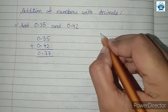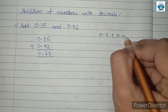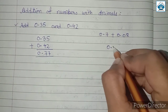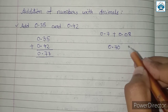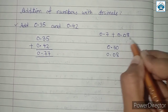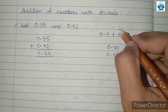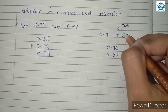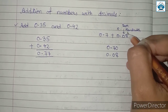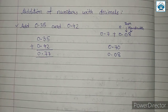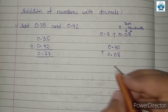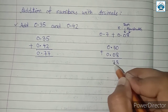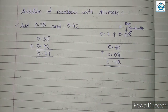Let us consider another example. Let us add 0.7 and 0.08. Again we will do vertical addition. Now 0.7 can also be written as 0.70. Why did I add 0? Because in 0.08 we have the hundredth place as well — this is the 10th place and this is the 100th place. The 100th place value was missing in 0.7, so to make addition easy I added a 0 to the right of 7. Point under point. 7 plus 0 is 7, and 0 plus 0 is 0. So this is equal to 0.78.